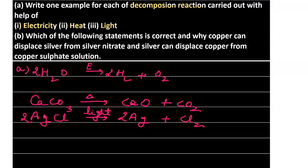The next question asks which statement is correct: copper can displace silver from silver nitrate (AgNO3), or silver can displace copper from copper sulfate. From the reactivity series, copper is more reactive than silver. Therefore, the first statement is correct - copper is able to displace silver from silver nitrate solution.